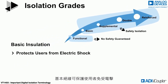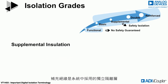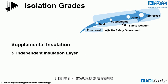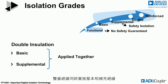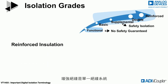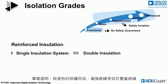Basic insulation protects users from electrical shock. Supplemental insulation is an independent insulation layer applied in a system to protect from faults that might breach a basic layer. Double insulation is both basic and supplemental insulation applied together. Reinforced insulation is a single insulation system that's demonstrated to be the equivalent to double insulation in terms of the protection provided.